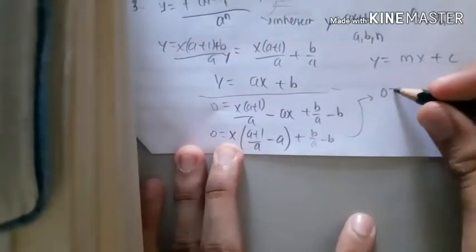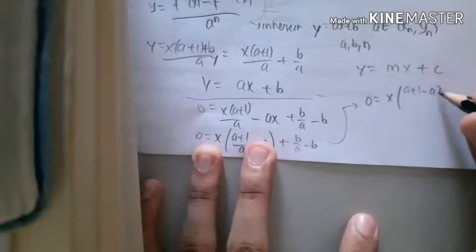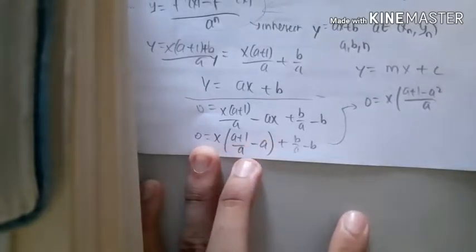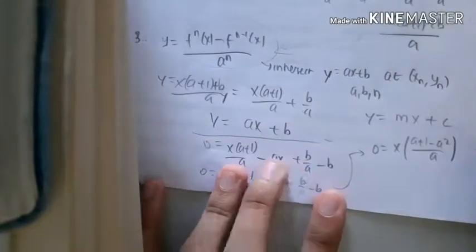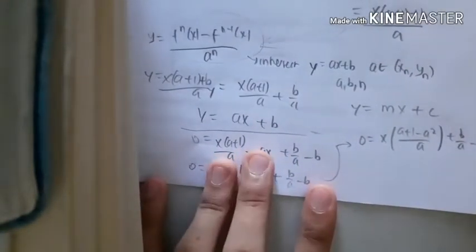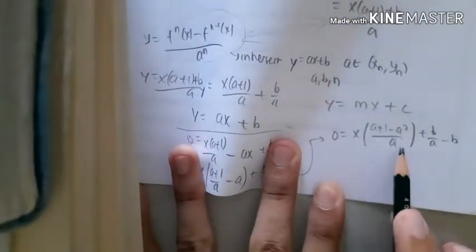x, it should become x of (a+1-a²)/a, you know, rationalizing the denominator plus b/a minus b. Now you know that to find x, we only move it to the side. So let me rewrite that at the next page.